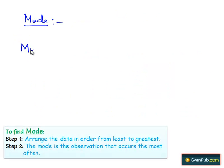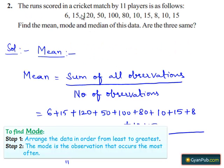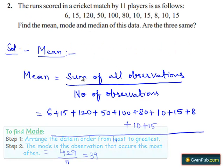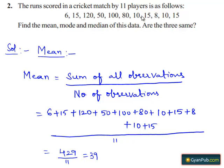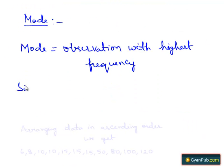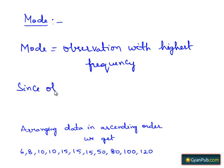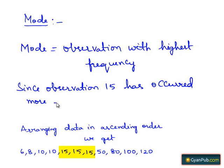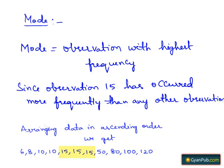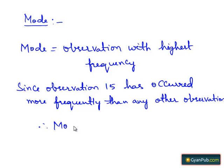Mode is equal to the observation with the highest frequency. Here the observation 15 has occurred more frequently than any other observation. Therefore mode is equal to 15.